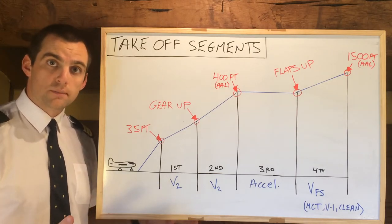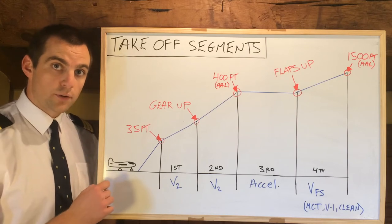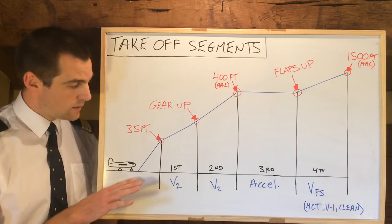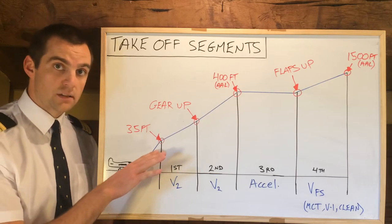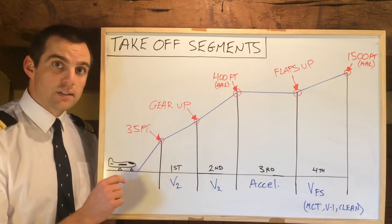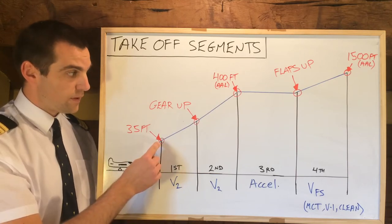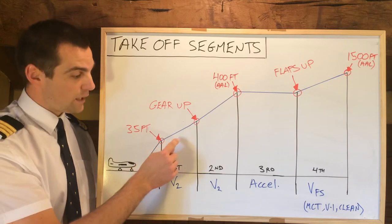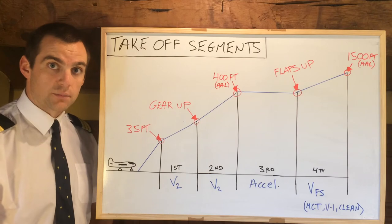Now there are four segments. As we start our takeoff roll, we go through all our takeoff speeds, we reach the lift-off speed, and we climb up to 35 feet. Now that is the start of our first segment. It goes from 35 feet, we keep climbing at V2 speed, up to gear up, and that is our first segment.